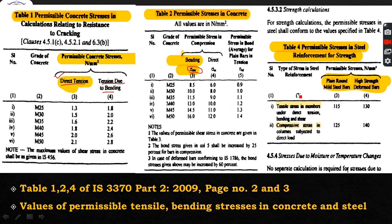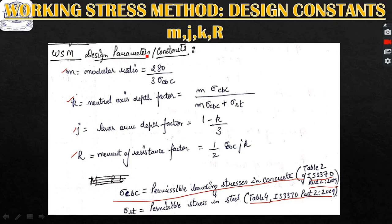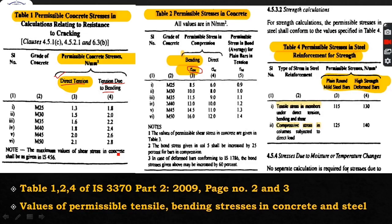Table 4 gives permissible stresses in steel for tensile and compressive stresses. For tension steel, we use the tensile stress value and for compression steel, the compressive value. We require these three tables for determination of the design constants M, K, J, and R.